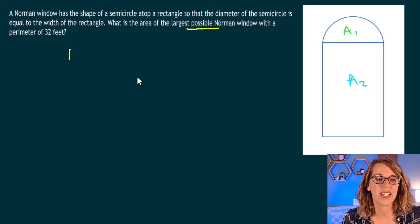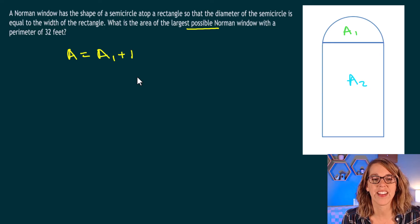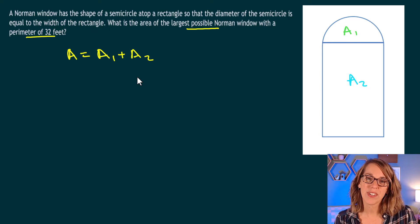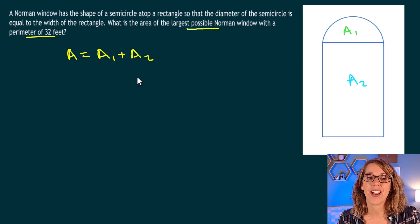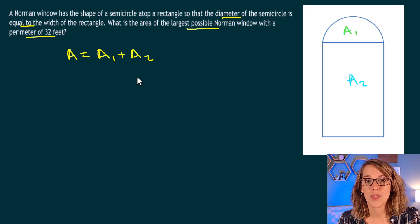So the total area is equal to area one plus area two. As I reread that first sentence, it says that the semicircle on top has a diameter that is equal to the width.